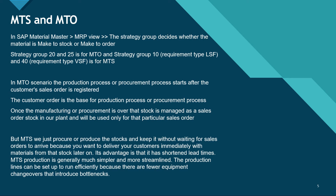In the MTO scenario, the production process or the procurement starts after the customer sales order is registered. So in make to order, we have an order and we are making the part with respect to that order. The customer order is the base of this process, and once we have completed the manufacturing, the stock is managed as a sales order stock in our plant and will be only used for that particular sales order.